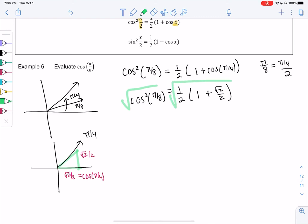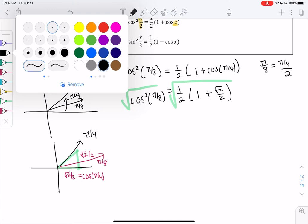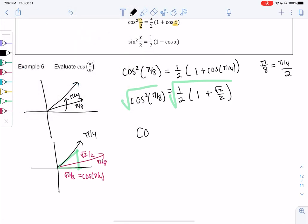And then do we want the positive root or the negative root? So because pi over 8 is in this quadrant, we want the positive root. Right, cosine is still positive. So cosine of pi over 8 is the square root of 1 half, 1 plus root 2 over 2. And I'm probably just going to leave it like this. I don't think there's really a nice way to write this one.